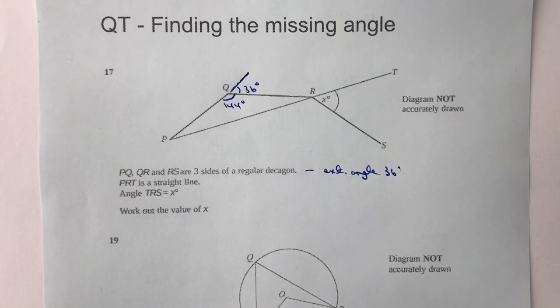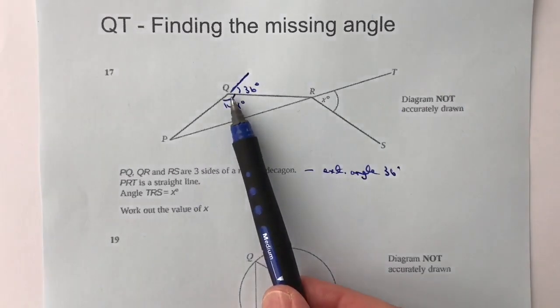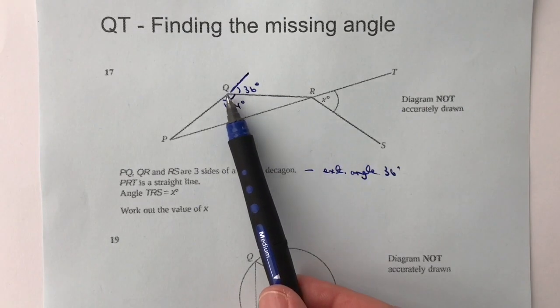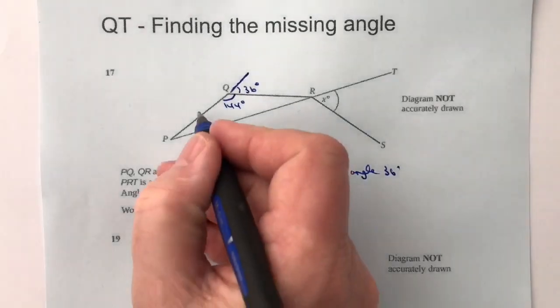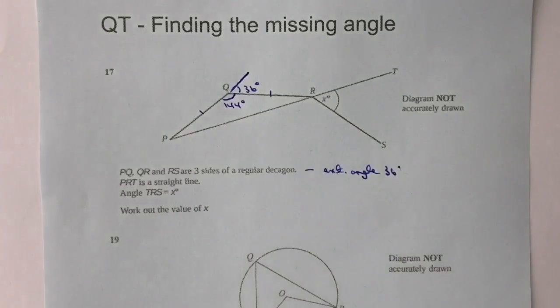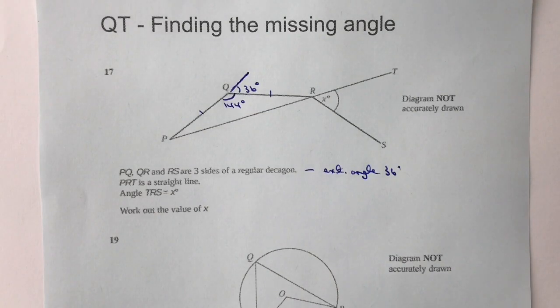Okay, so because I've got now this top angle, I also know because it's a regular shape that PQ and QR are equal to each other. So therefore what I've got actually is a fairly classic isosceles triangle. So I know that the internal angles of a triangle add up to 180 degrees.